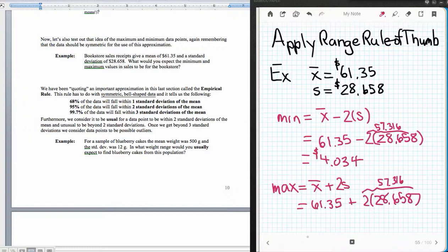And those are in dollars. And then if I add it to this, 61.35, and I add this time 57.316, I'm going to get 112. So my minimum values that I would expect to see would be approximately, oops, no, that's, I don't think that's right.